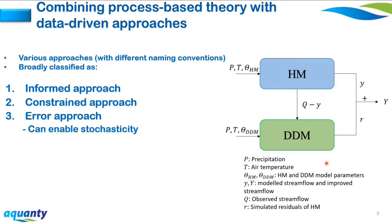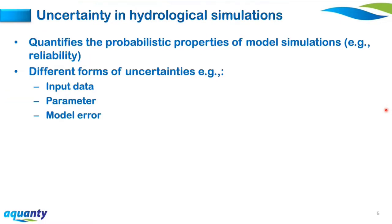Finally, the 'error' approach has the data-driven model simulate the residual of the hydrological model. The residual is given by the difference between observed streamflow Q and simulated streamflow Y. This is the target variable for the data-driven model, and its output R — the hydrological model residual — is summed with the hydrological model simulation to give a refined streamflow output. Interestingly, this approach can enable stochasticity.